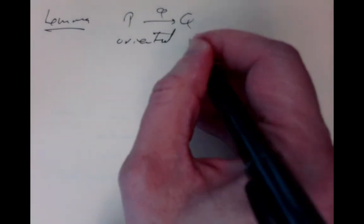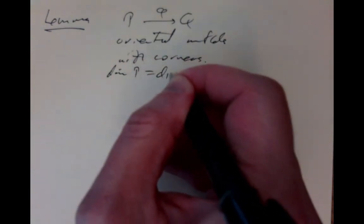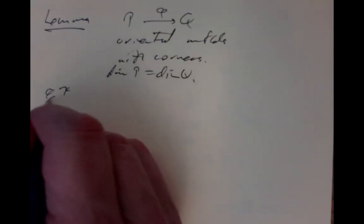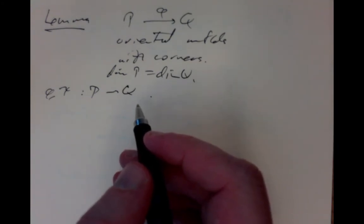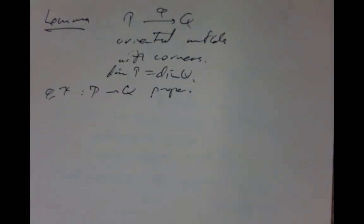For our next lemma, suppose φ: P → Q is a proper smooth map of equal-dimensional oriented manifolds with corners, with φ(∂P) ⊆ ∂Q. Suppose also that ψ: P → Q is another proper smooth map with ψ(∂P) ⊆ ∂Q.